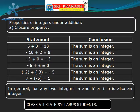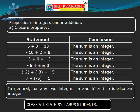Now let us take two integers minus 3 and 0 and add them. We get the sum minus 3, which is an integer. Now let us take minus 6 and plus 6 and add them. The sum we get is 0, which is an integer. Let us take two negative numbers, minus 2 and minus 3, and add them. The sum is minus 5, which is also an integer.